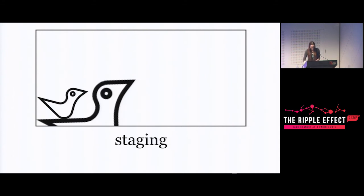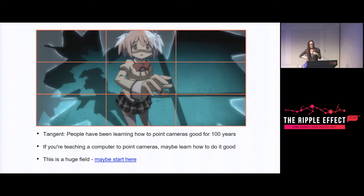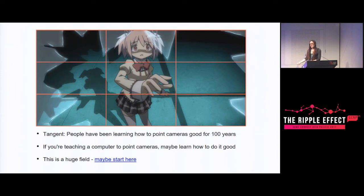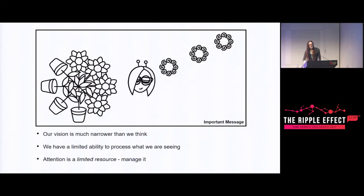Staging. Games are, for the most part, a screen media, and there is a century of research on framing things on screens. If you're writing a camera controller - which is essentially teaching a computer how to point cameras at things - it's good to go and study some composition or basic cinematography. There's a lot of knowledge out there and even just the basic principles can really help you when applying that in a programmatic approach. There's a link to a good YouTube channel called Every Frame a Painting that does pop cinematography analysis if you want to start.